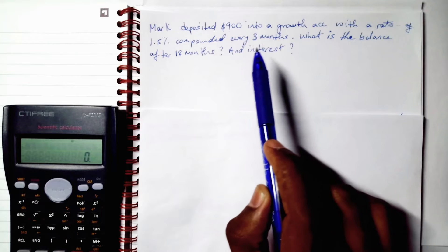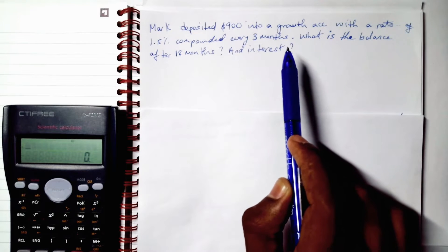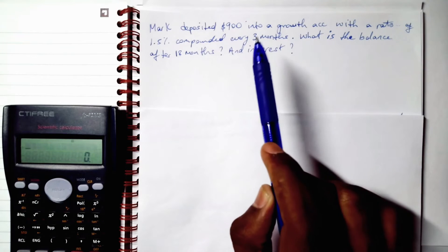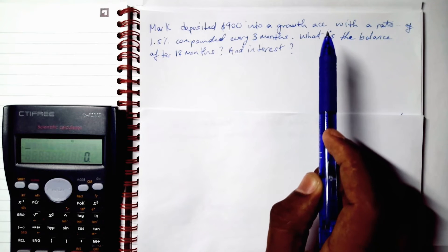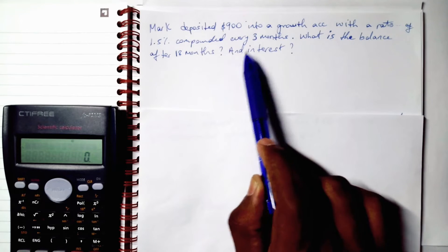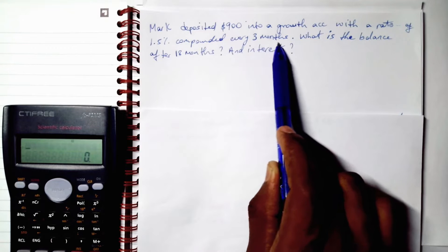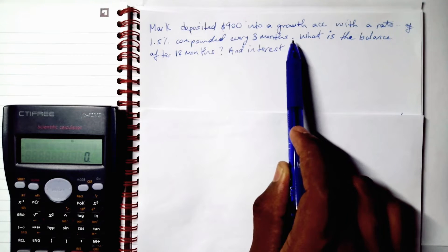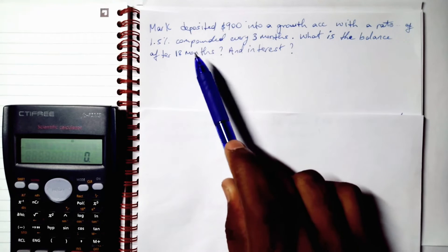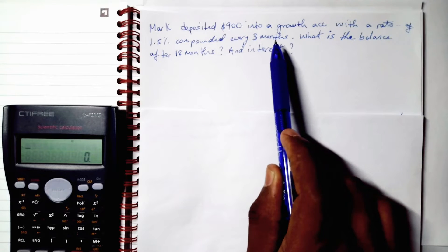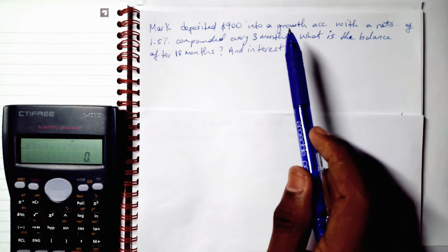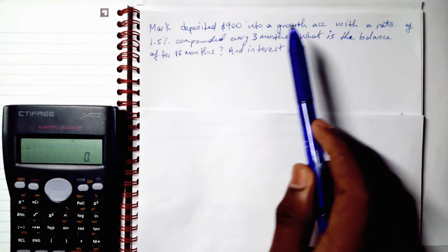So if it compounds every three months, how many three months are in a year? There are four three months or four three month periods in a year.